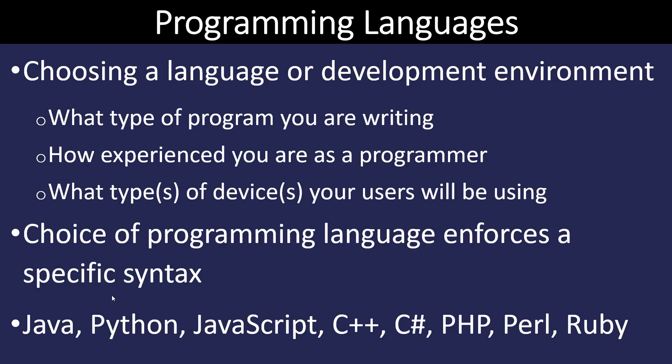After you have developed your logic for the program, you then need to choose a programming language to develop the application. Some things to consider when choosing a programming language are what type of program you are writing, how experienced you are as a programmer, and what types of devices your users will be using. The programming language provides the exact syntax for your code — for example, the character used for a comment or the way conditional statements are written varies from language to language. There are many programming languages to choose from, all with different applications, and you should match your choice with the software you're looking to develop.